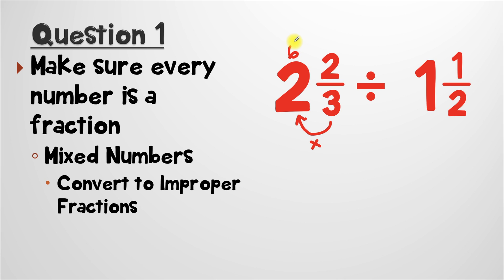The next thing we have to do is add on the numerator. So we'll have six plus two, and six plus two is eight. I'll put eight here, and that's going to be our numerator. The last step is to keep the denominator exactly the same. Since our denominator is three, we'll just write that here. So the improper fraction is eight over three.